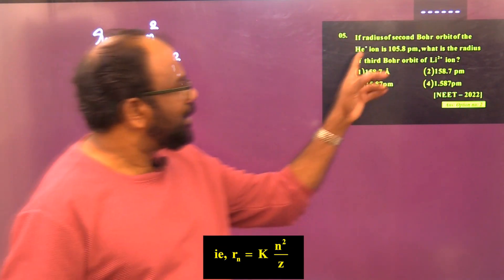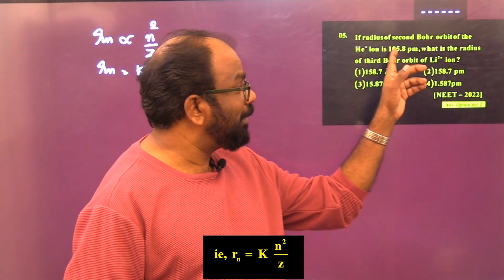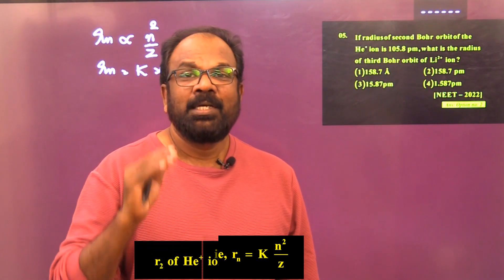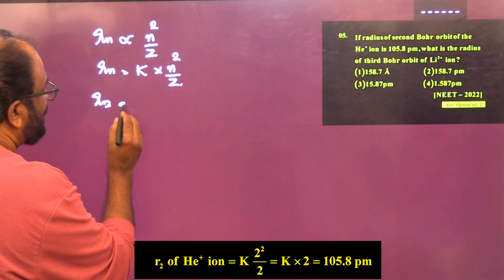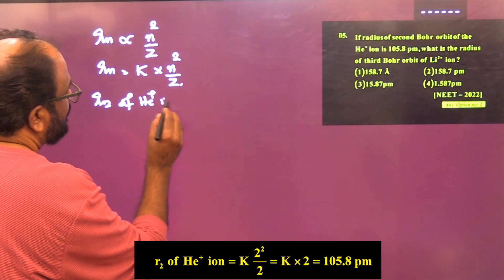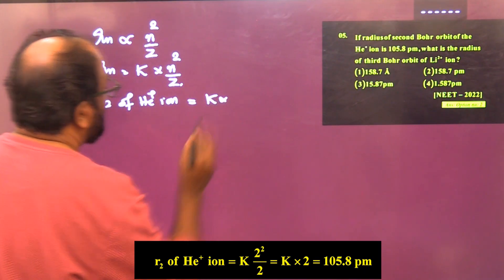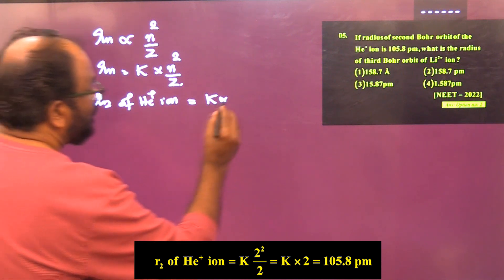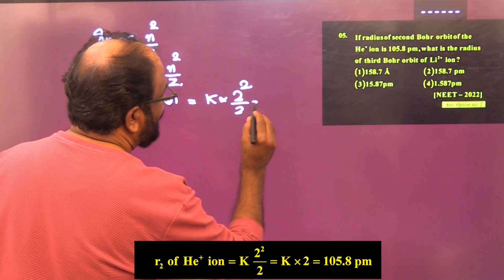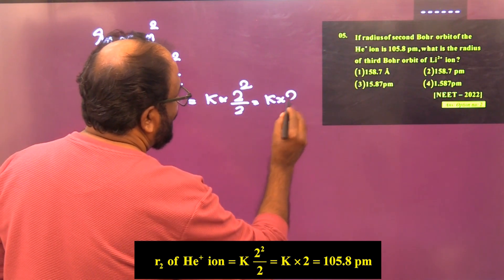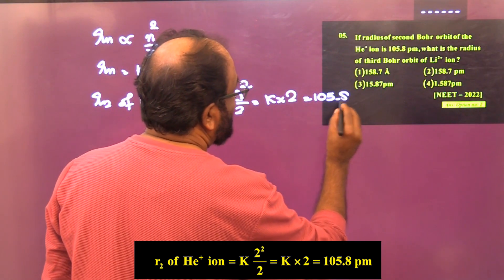In the question, the radius of the second Bohr's orbit of the He+ ion is given as 105.8 picometer. So we calculate r2 of He+ ion: r2 = k × 2² / 2 = k × 2, which equals 105.8 picometer.